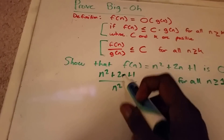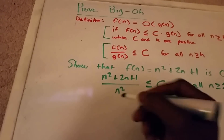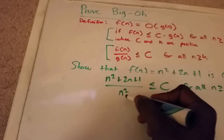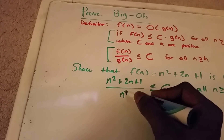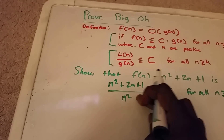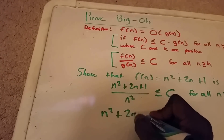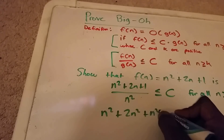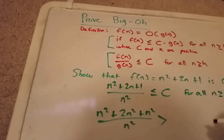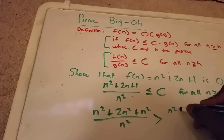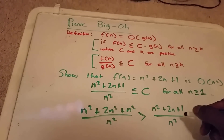And we want to find a function bigger than this one. So what we can do is replace everything that's not as large a variable as n squared — what we're dividing by. So we know that n squared plus 2n squared plus 2n squared plus n squared, all over n squared, is greater than n squared plus 2n plus 1 over n squared.